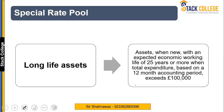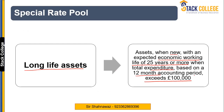Another type of special rate pool item is long life assets. The definition of a long life asset is: those assets which, when new, have an expected economic working life of 25 years or more, and where the total expenditure in a 12-month period exceeds £100,000. So there is a life condition and a condition related to the amount.